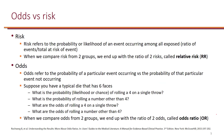Another example to help understand odds: imagine you have a die with 6 faces. The probability of rolling a 4 on a single throw is 1 out of 6. The probability of rolling a number other than 4 is 5 out of 6. When it comes to odds, we no longer use the total. So the odds of rolling a 4 is 1 to 5, and the odds of rolling a number other than 4 is 5 to 1.